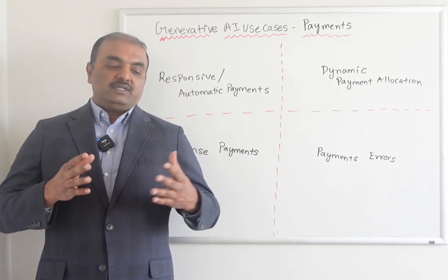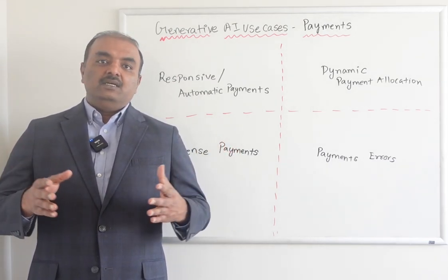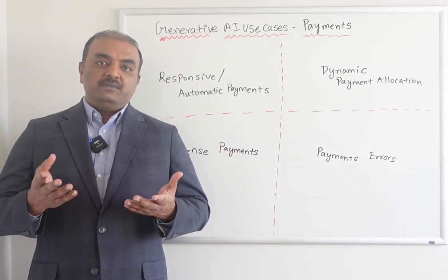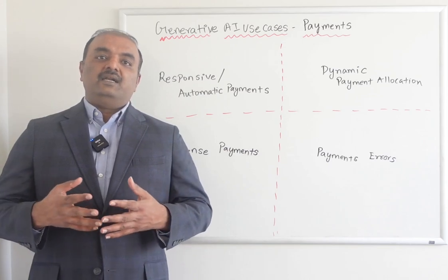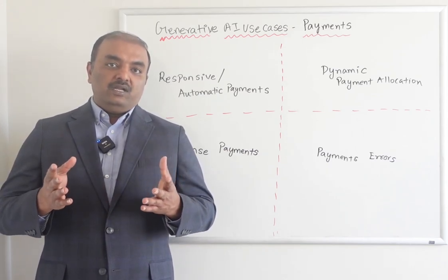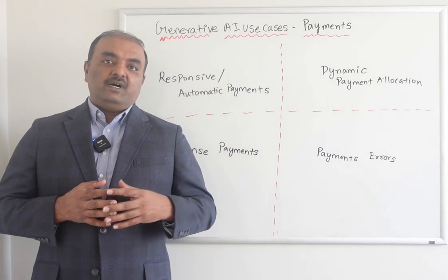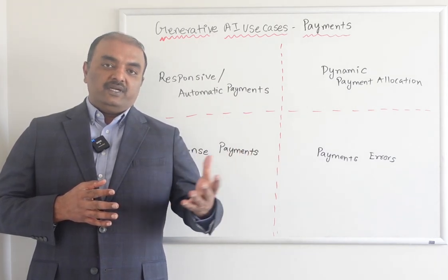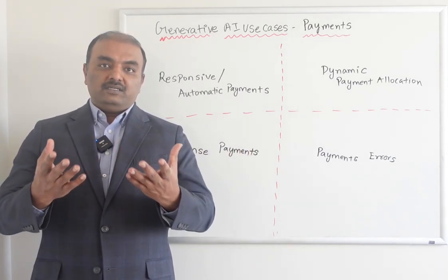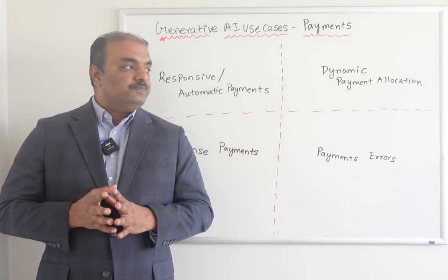And if both the customer and the insurance company agree, you can convert them into Direct Debit. This can be done through AI, where it reads the data and past historical payments and recommends the conversion process.